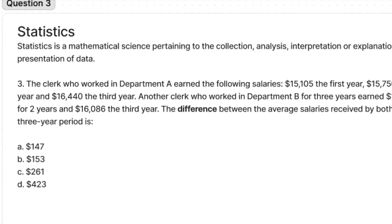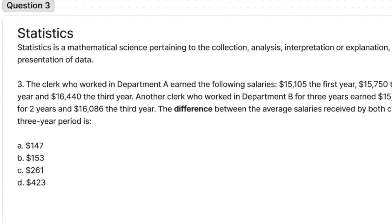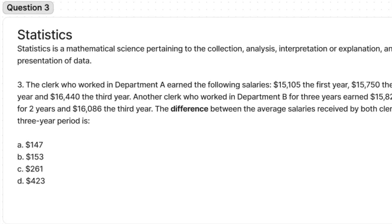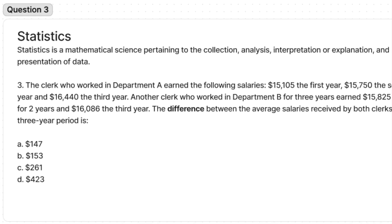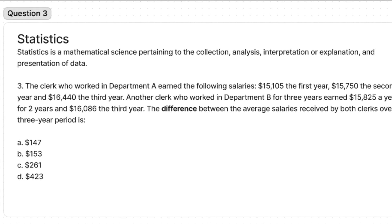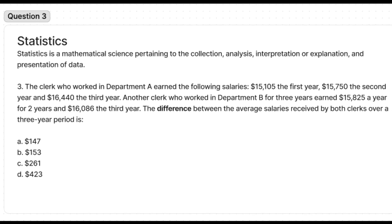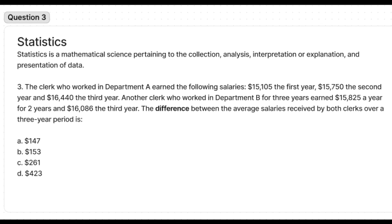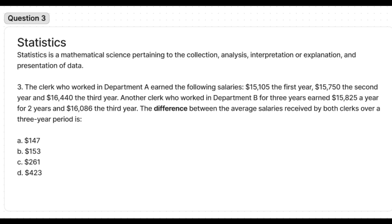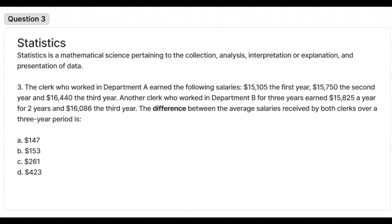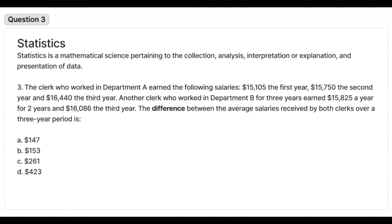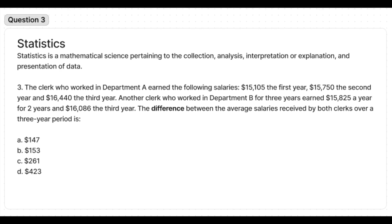The difference between the average salaries received by both clerks over a three-year period is: A) $147, B) $153, C) $261, D) $423.